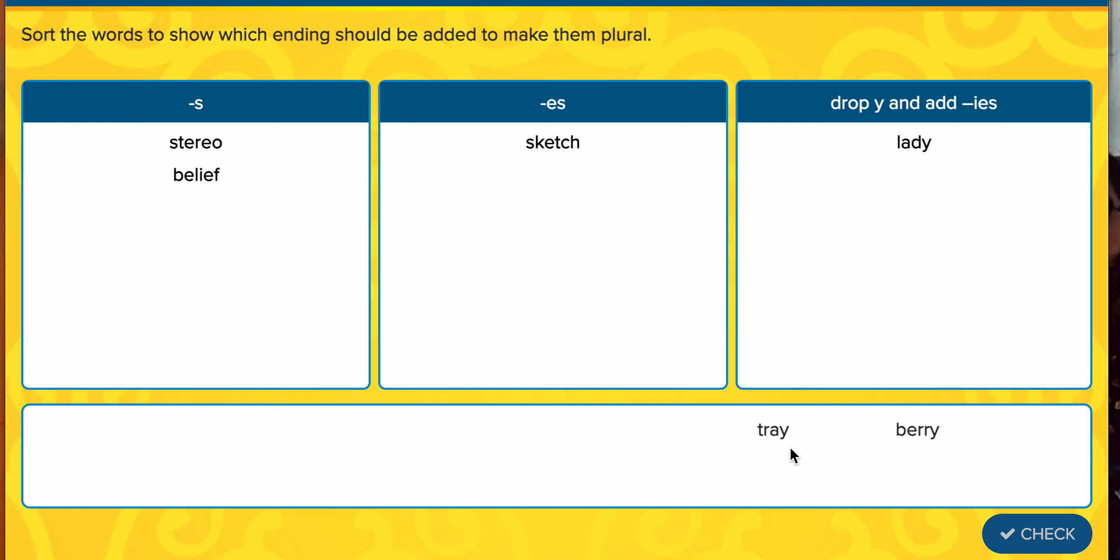Same here. My word tray. Tray has that y at the end. So I'm going to drop that y and add i, e, s. And lastly, we've got berry, berry. Once again, ends in a y. I'm going to drop that y and add i, e, s. And let's see, ooh, Miss G made a mistake. Now, who can tell me what mistake I made and why? Does anybody know?